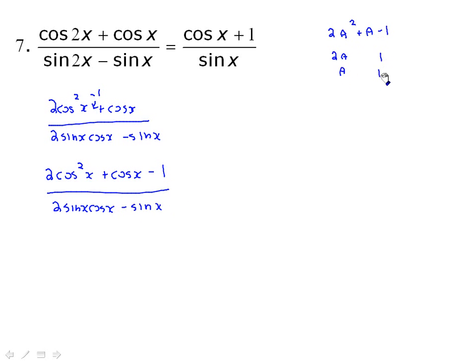If you fold them together, you're going to get 2a squared plus a minus 1. So in the terms of cosine, this would factor into 2 cos x take away 1, multiplied by cos x plus 1. And then that denominator, by factoring out a sine x, we'll get 2 cos x minus 1.